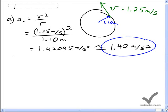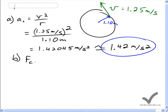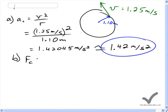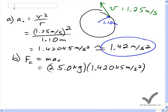For part B, we'll find the centripetal force, which is mass times the centripetal acceleration. And this is 25.0 kilograms times our answer from part A, 1.42045 meters per second squared. And we get 35.511 newtons, with 3 sig figs as 35.5 newtons.